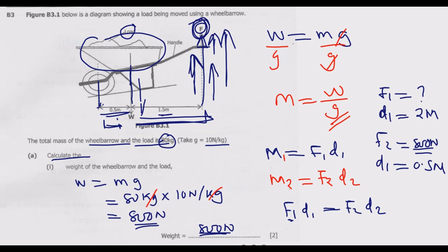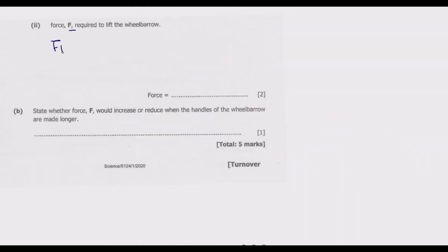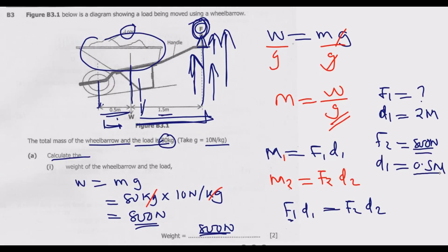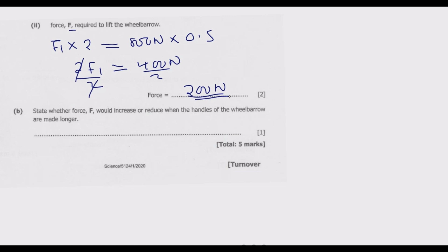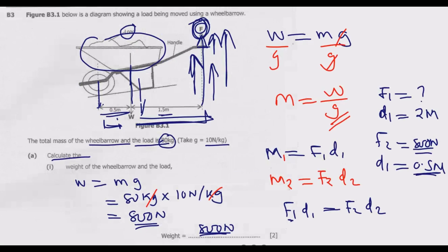Substituting: F times 2 equals 800 newtons times 0.5 meters. This gives 2F equals 400 newtons. Dividing both sides by 2, we find that force F equals 200 newtons. That is the minimum force required to lift the wheelbarrow upward.